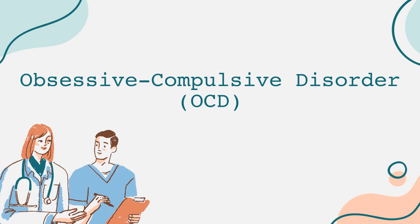Now let's discuss compulsions. Compulsions are behaviors that individuals feel compelled to perform in response to their obsessions or according to rigid rules. For example, someone might wash their hands multiple times to reduce the fear of germs, or they may check locks repeatedly to ensure safety. While these behaviors can provide temporary relief, they ultimately reinforce the cycle of anxiety as the obsessions return.